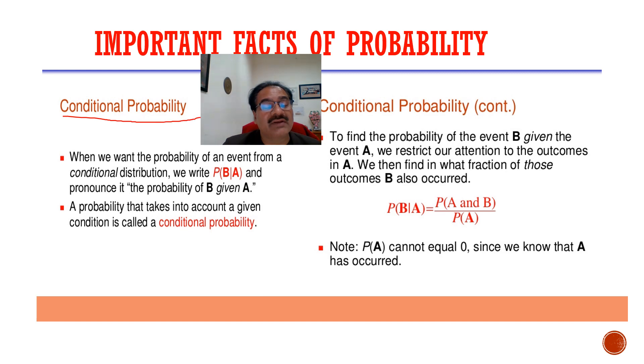Some other important facts on probability. What do you mean by conditional probability? When we want the probability of an event from a conditional distribution, we write P of B divides A and pronounce it as the probability of B given A. A probability that takes into account a given condition is called the conditional probability.